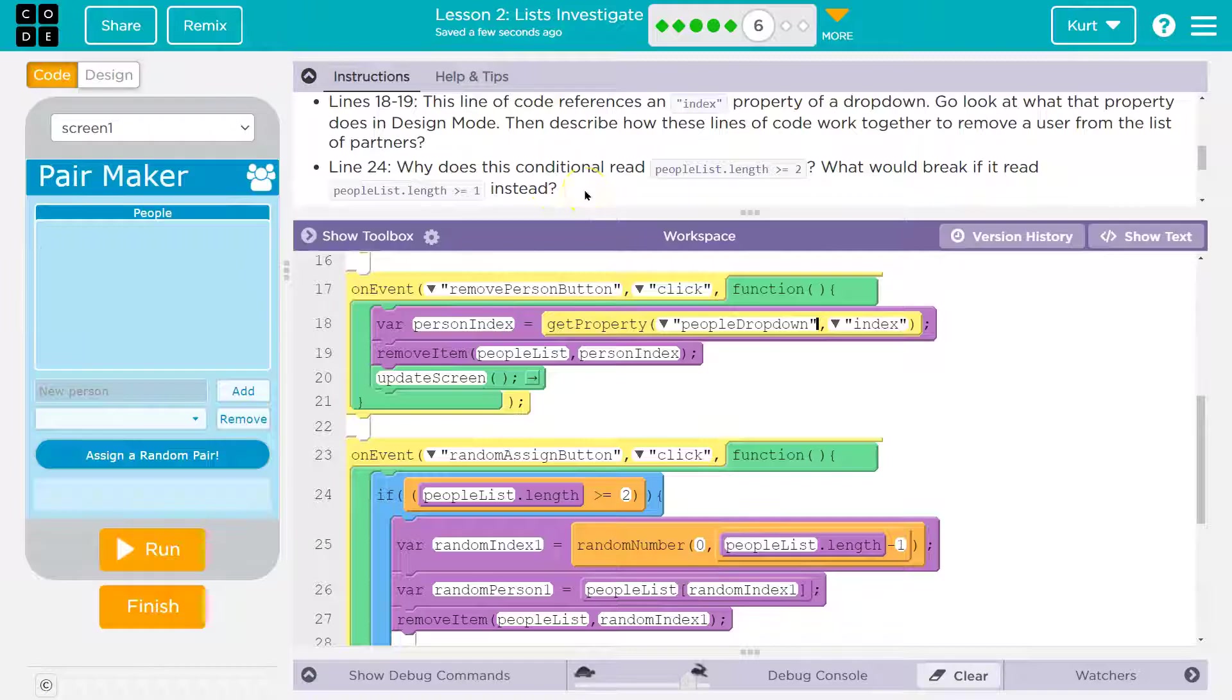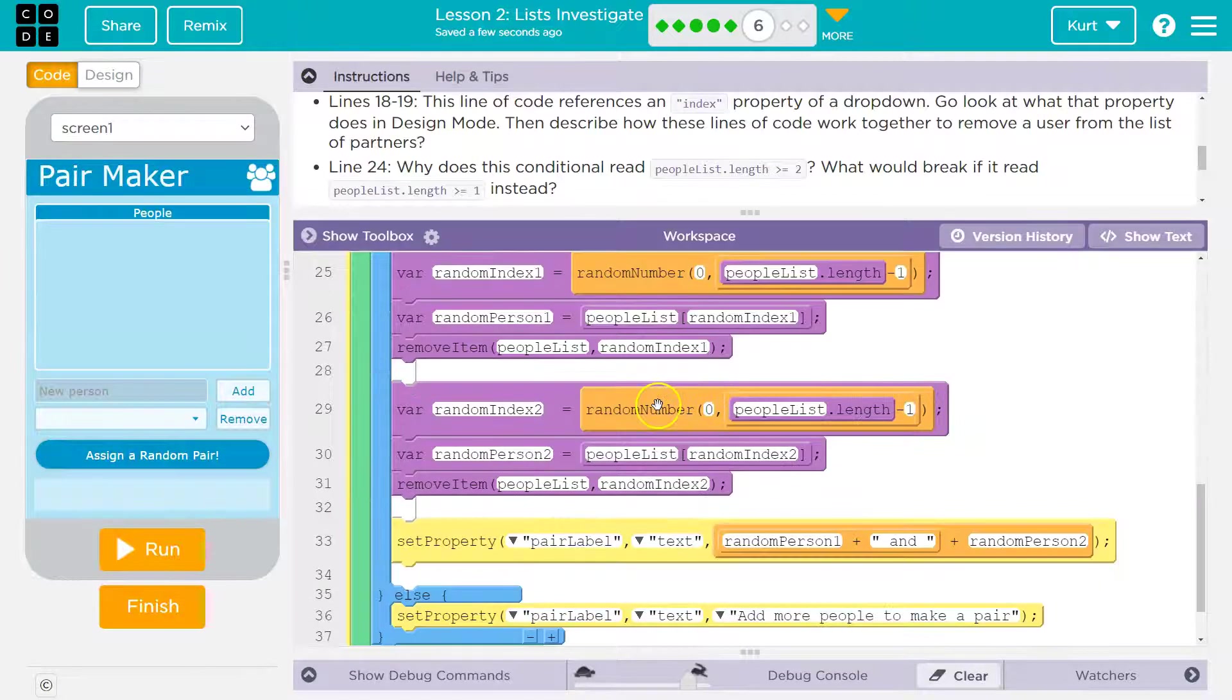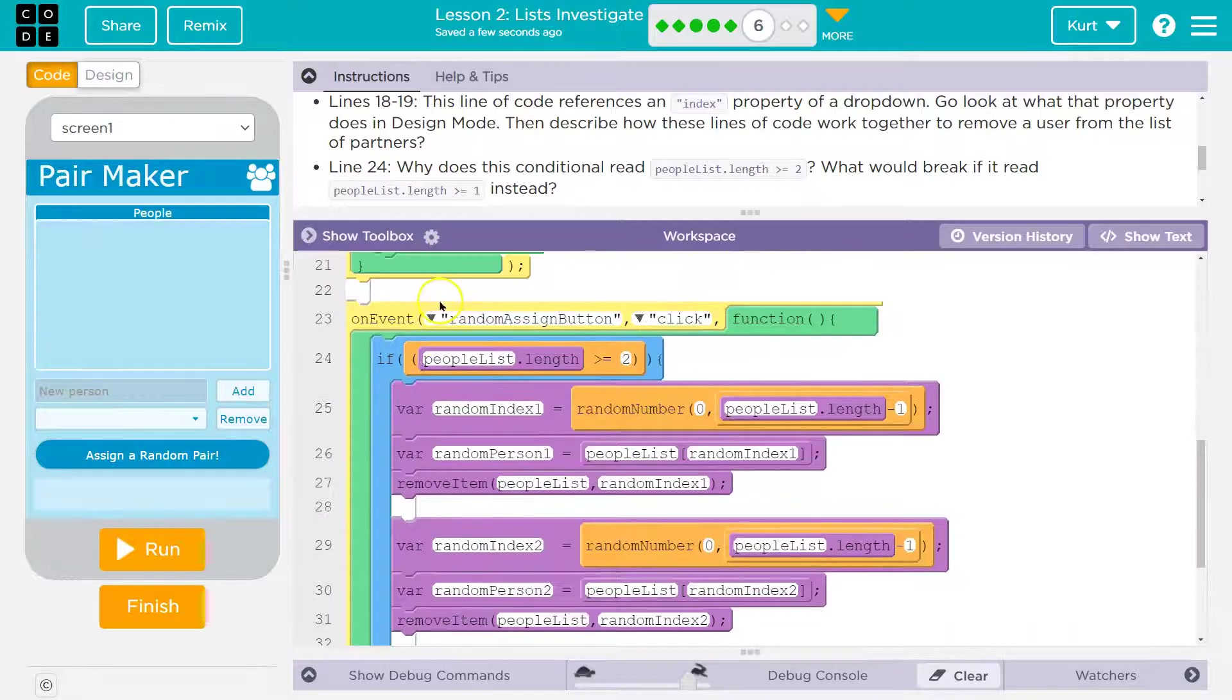Now, why does this condition read people dot list is greater than dot length is greater than or equal to two? What would break if it read people dot people list dot length is greater than or equal to one? Line 24. What would break is if you don't have two people, you can't assign partners. So it would no longer work.